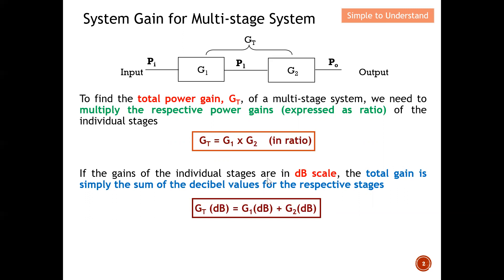If the gain of the individual stages are in decibel scale, the total gain is simply the sum of the decibel values for the respective stages. So if G1 is expressed in dB and G2 in dB, I can compute the total gain as G1 plus G2 in dB. If I have a third or fourth stage, I multiply G3, G4, etc. in ratio, or add G3 plus G4 in dB. This is how we obtain the total gain either in ratio or in decibel.